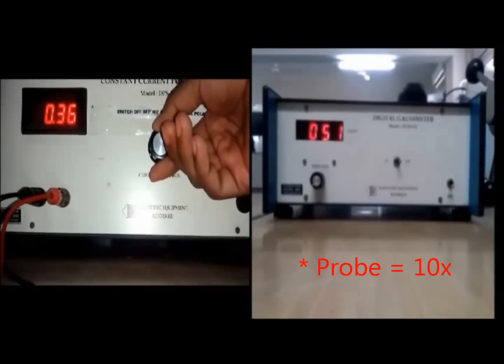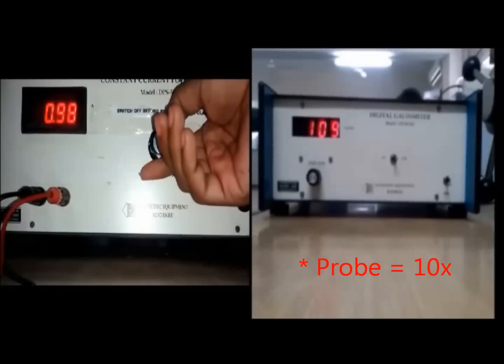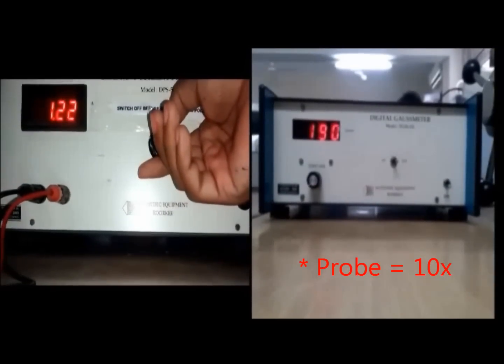Vary current in constant current generator such that the magnetic field between the poles of the electromagnets becomes 2000 gauss as displayed on the gauss meter.